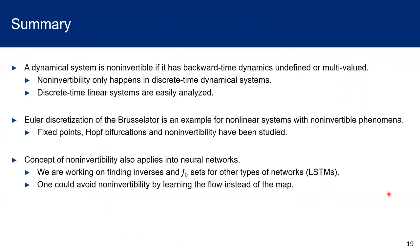To sum up, we have shown the concept of non-invertibility, and put our attention into discrete-time non-linear dynamics. We use the Brusselator model as an example to discuss its properties, like fixed-point, Hopf bifurcations, and non-invertibility, in its discrete-time version. We also point out this concept could be applied to neural networks, and we are now working on other types of neural networks to find these pathologies such as LSTMs. Last but not least, we revealed that there are two ways to avoid the non-invertibility in approximating dynamical systems, for example, to learn the flows instead of the maps. Here are the references I have used. Thanks for your time.